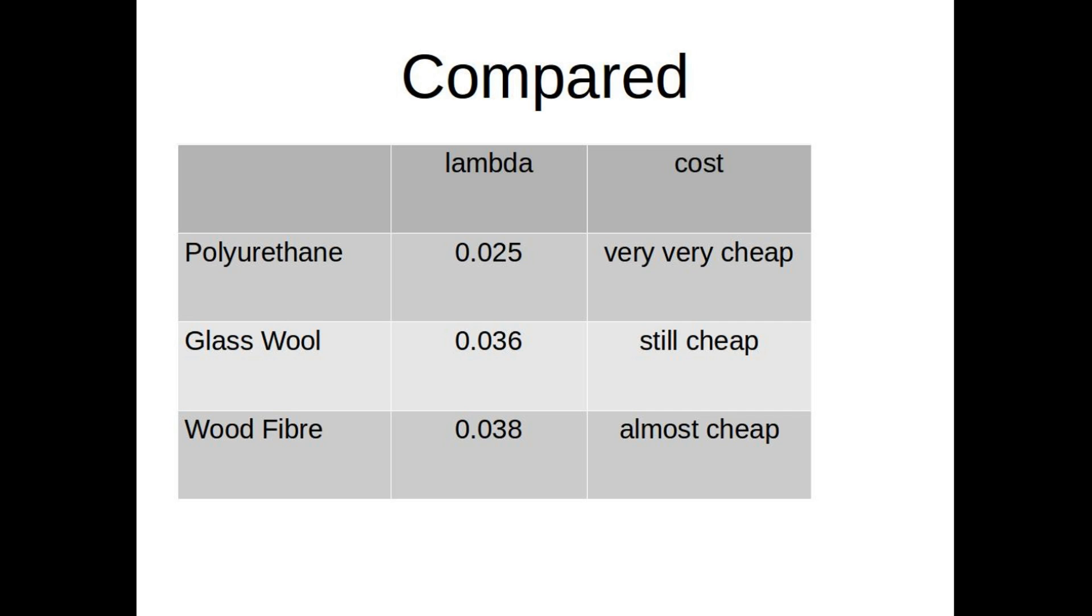And then finally wood fiber, 0.038 lambda value which is below the rest and also it costs more. So the question is, why would you use wood fiber instead of a really cheap product like polyurethane, which even has the best properties? Well, in this video we will try to explain this to you.